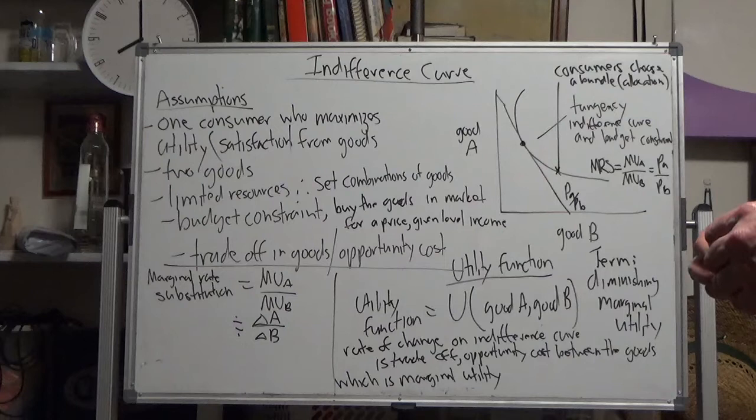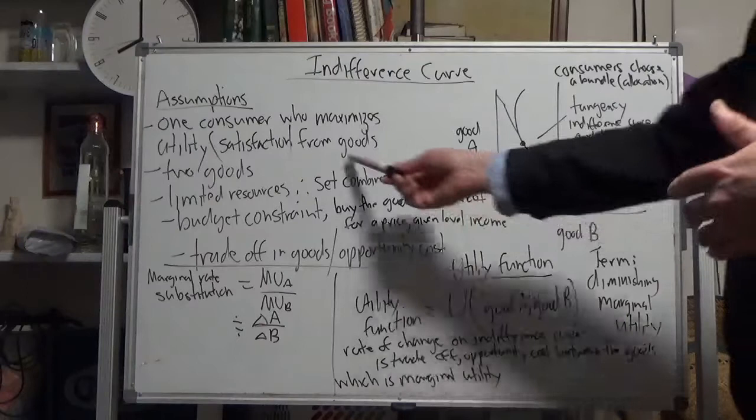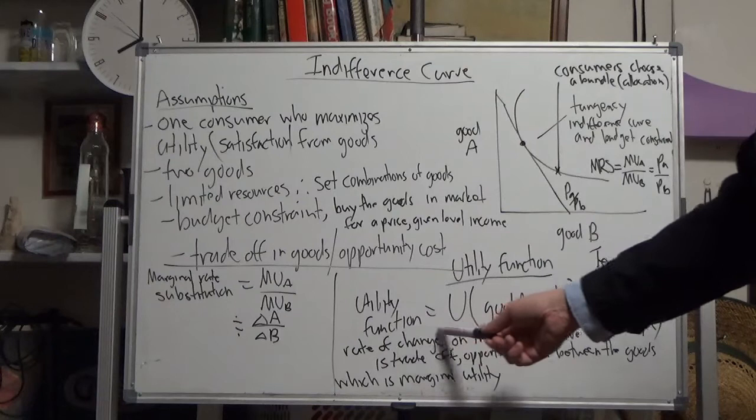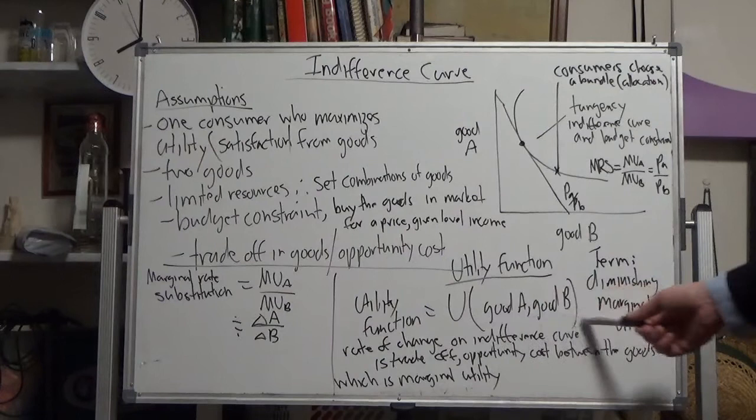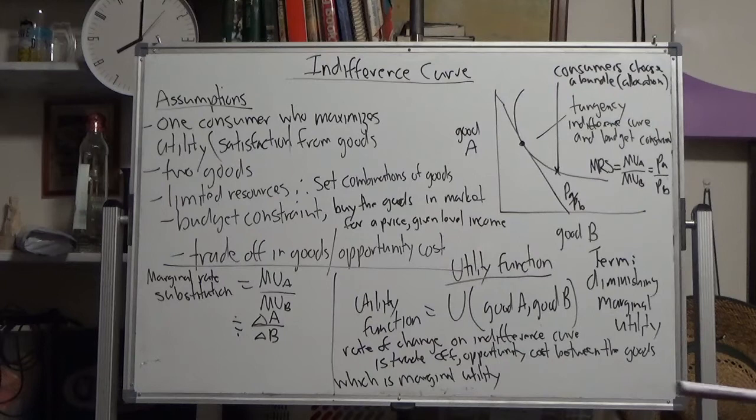You start with one consumer who maximizes utility, the satisfaction from goods. The utility function for two goods, one of our assumptions, is U equals utility of all goods available to that consumer. If there were more than two goods, you would list the rest in this function.